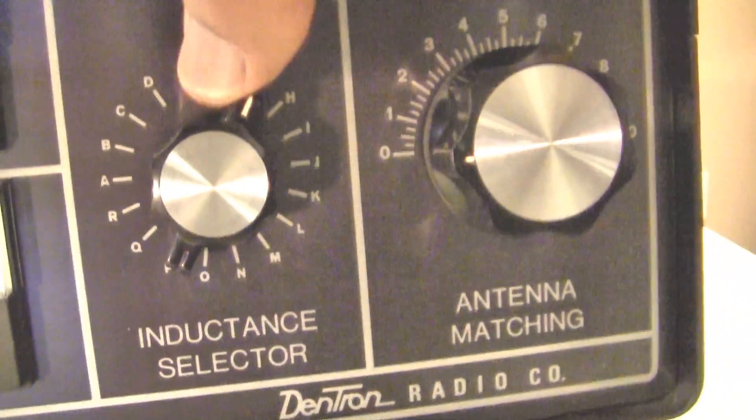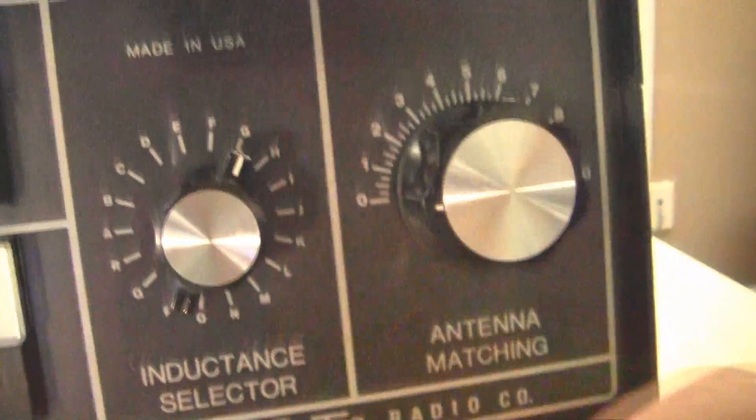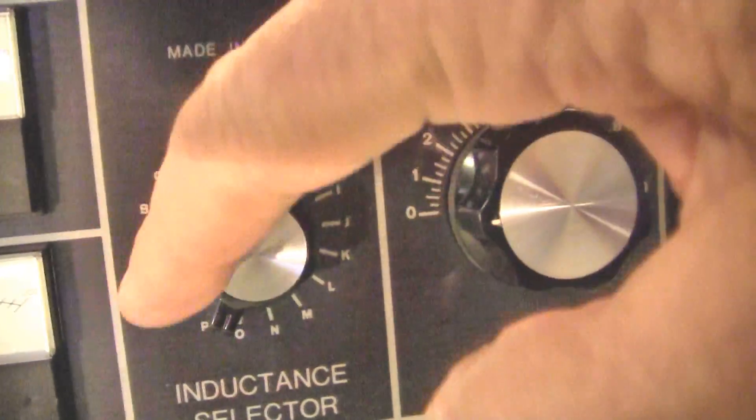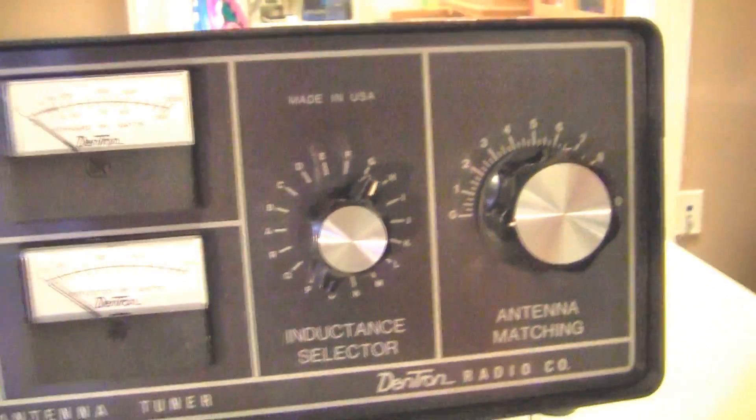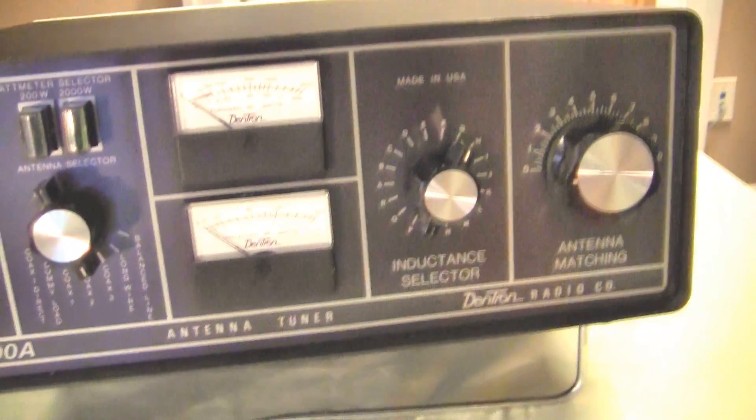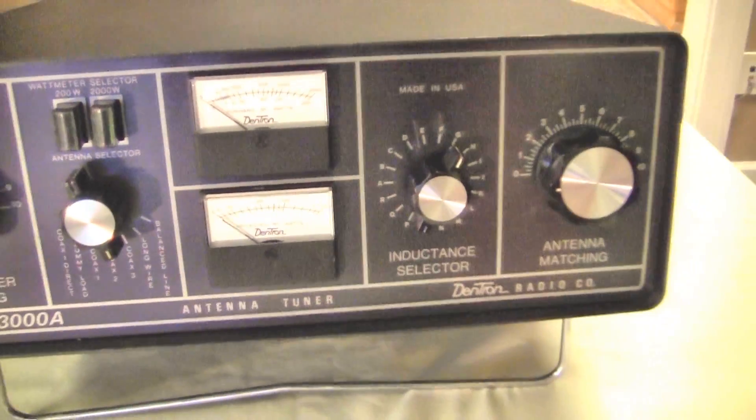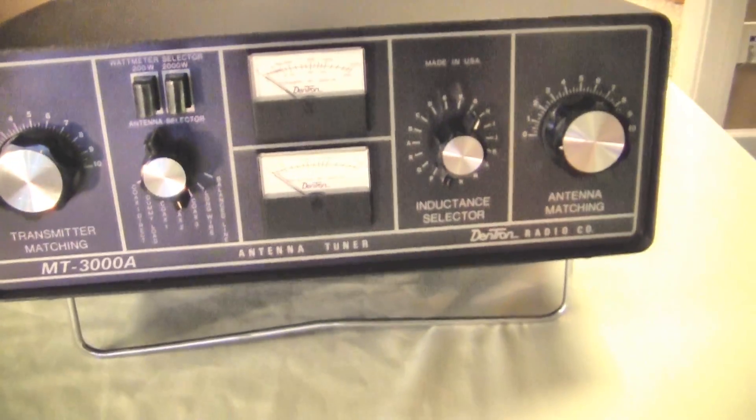Now the inductor has many taps. It's a tapped inductor from A through R, so we can select the inductance this way. Pretty straightforward, standard tuning for a T-type antenna tuner. So let's sneak around back and take a look and see what we've got back here.